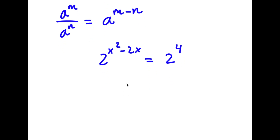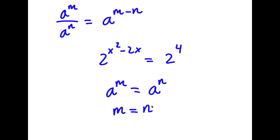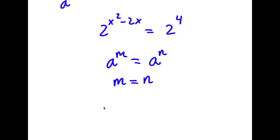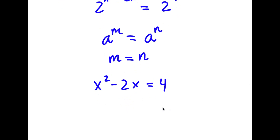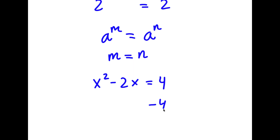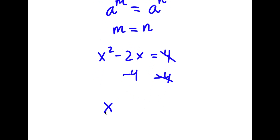If I have a to the power of m equal to a to the power of n, this means m equals n. So in this case, x squared minus 2x is equal to 4. Subtracting 4 from both sides, I get x squared minus 2x minus 4 is equal to 0.